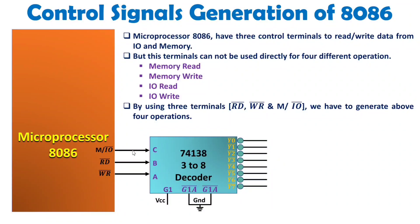The decoder works as follows: input 000 selects Y0; 001 selects Y1; 010 selects Y2; 011 selects Y3; and 111 selects Y7 — based on the binary number. The meaning of selection is: since these are active-low output lines, whichever line is selected will be logic 0, and all other lines will be logic 1.